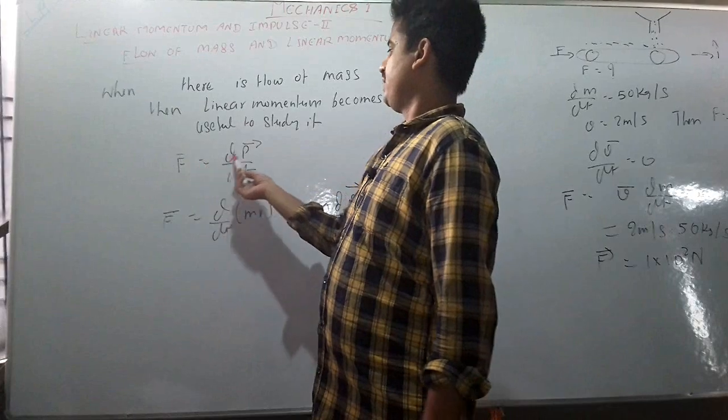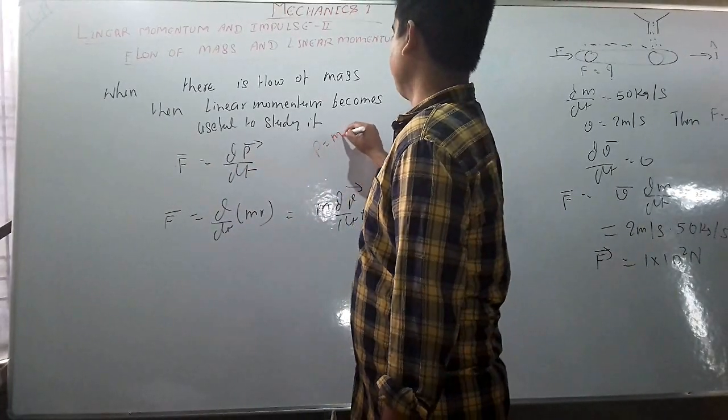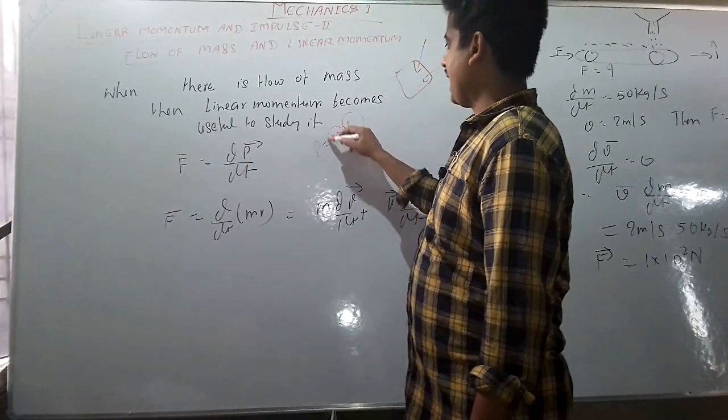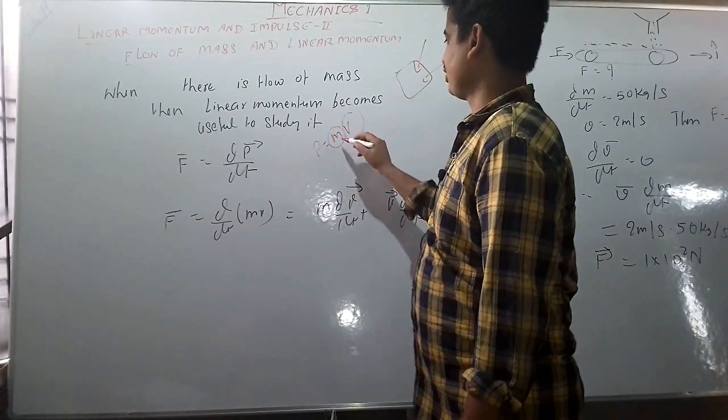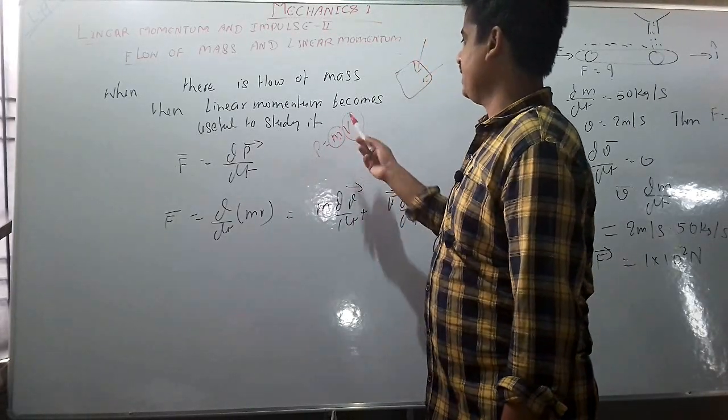F is equal to dp by dt and p is mv. Here v is also changing and m is also changing. Total mass of any system is changing. It means we have to differentiate m and v individually.